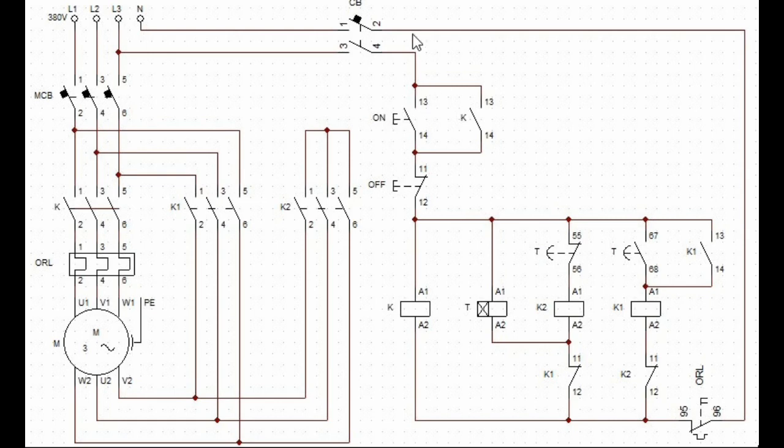The neutral line will pass through the overload, normally closed contact 95 and 96 to contactor K2 and K1, normally closed points 11 and 12. Timer coil A2 is linked with contactor K1 contact 11 to supply the neutral line.